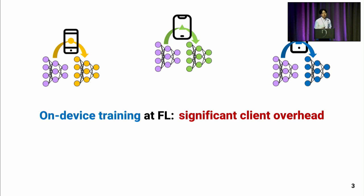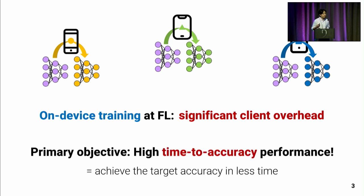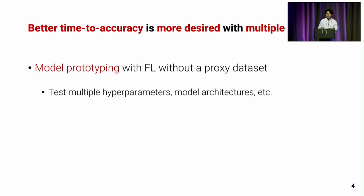However, federated learning requires client devices to perform on-device training of large neural networks on mobile devices, and this incurs significant client overhead. For this reason, many recent federated learning works have a primary objective of achieving high time-to-accuracy performance, which means achieving the target accuracy in less time. This better time-to-accuracy is more desired when you have to run multiple federated learning experiments — for example, if you want to prototype a new model without a proxy dataset, or test multiple hyperparameters or model architectures, and you want to reduce user cost.